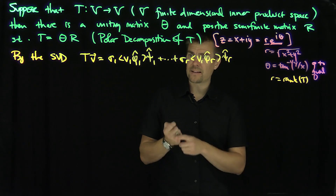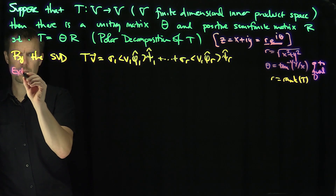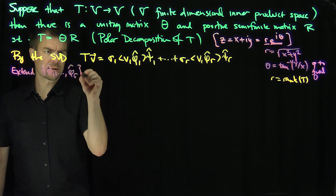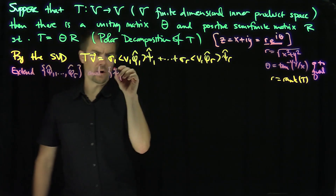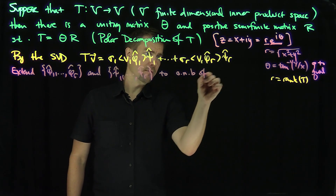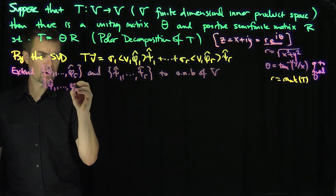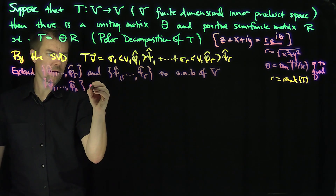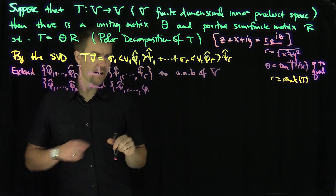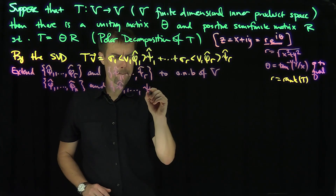T might not be invertible, might not be full rank. So I can extend these orthonormal bases to bases of the entire space. We extend φ̂₁ through φ̂_R, and ψ̂₁ through ψ̂_R, to full orthonormal bases of V, going all the way up to N, where N is the dimension of the space. So we get φ̂₁ through φ̂_N and ψ̂₁ through ψ̂_N.